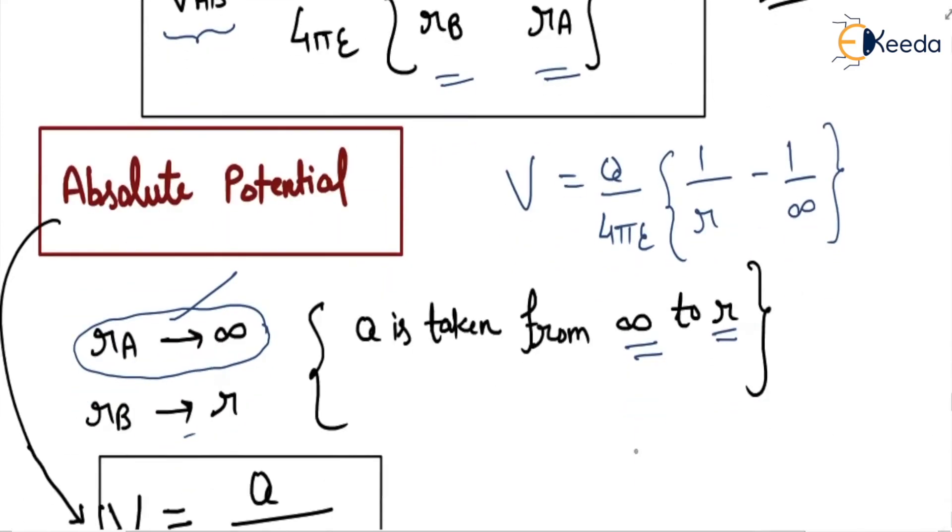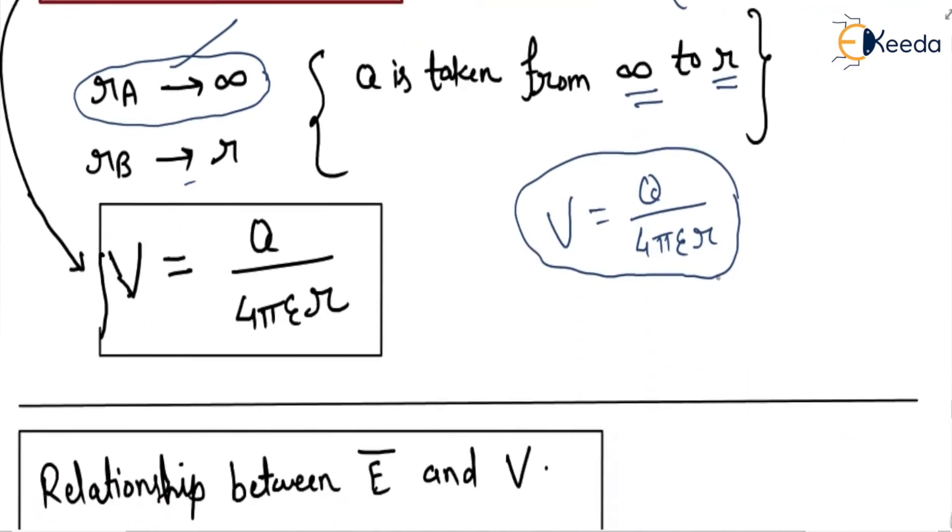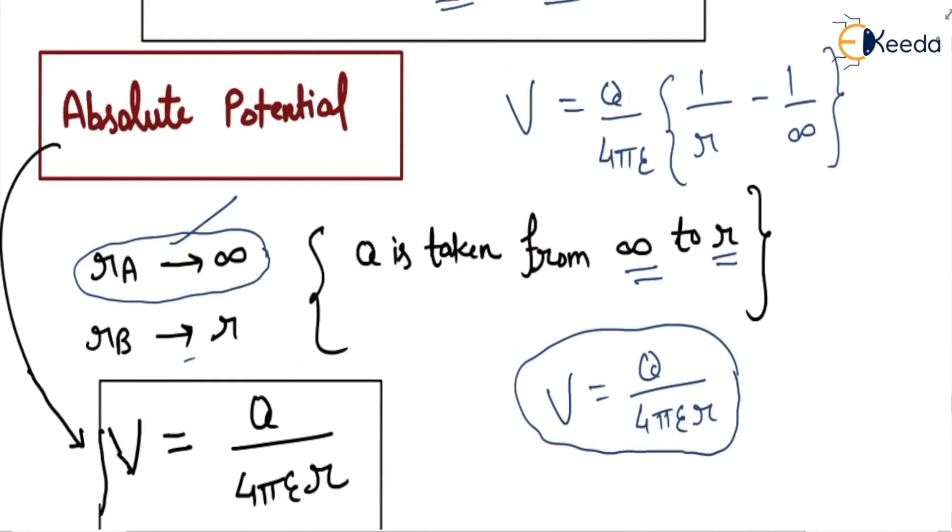So this answer is q/(4πε₀r). This is potential, this is called absolute potential. So V = q/(4πε₀r), this is called absolute potential.